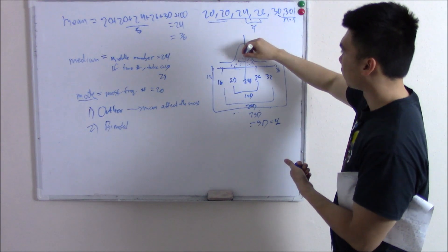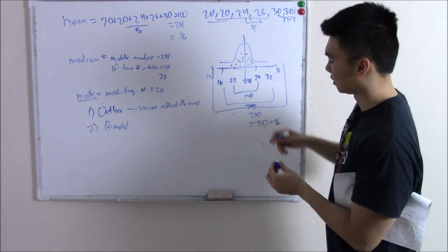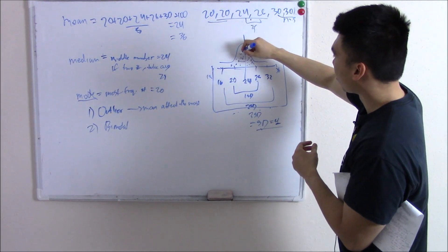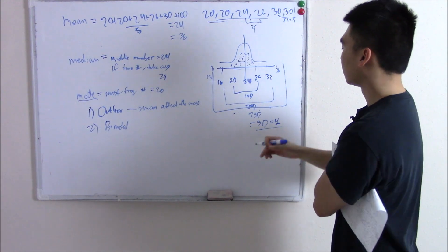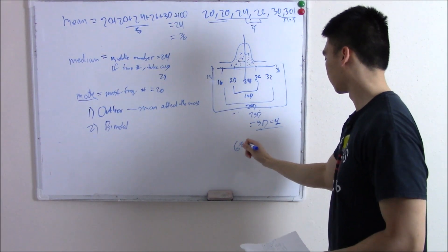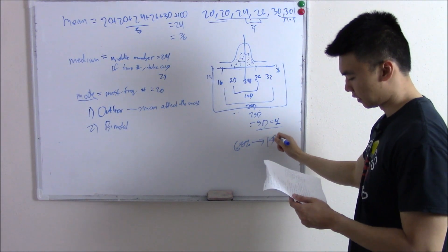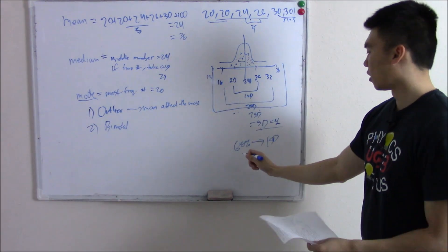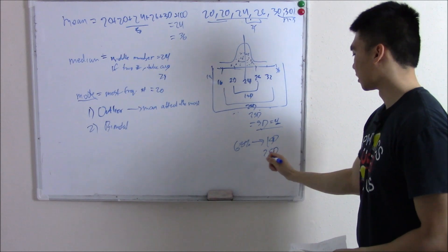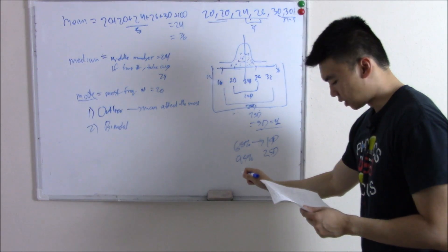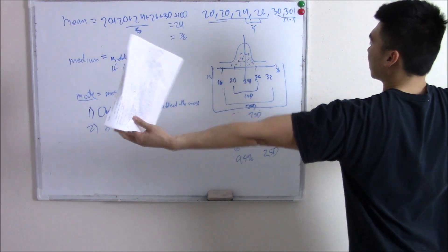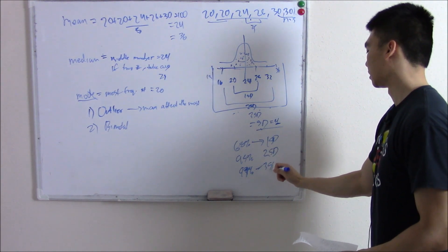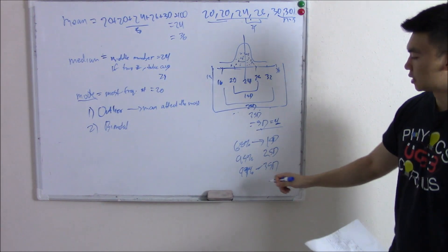Most of our data will fall within the first standard deviation. About 68% will fall within one standard deviation. If you expand it to two standard deviations, it picks up 95%. And if you expand all the way to three standard deviations, basically picking up as much as we can, 99% of data will fall within three standard deviations. These numbers are very important to remember.